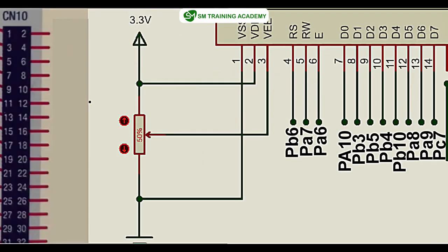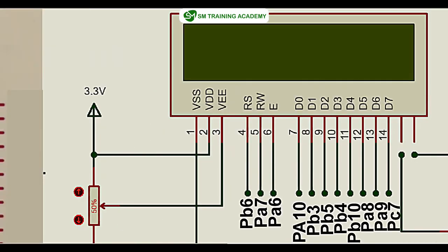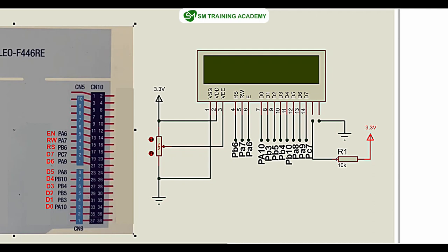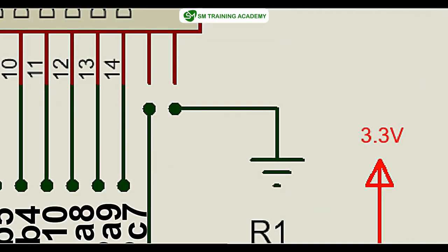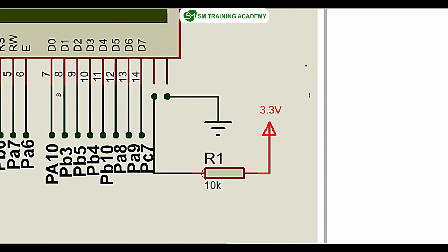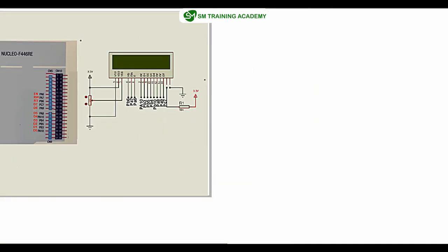For powering the LCD: VSS, the first pin, is connected to ground of the development board; VDD is connected to the 3.3V pin of the development board; and VEE is connected to a 10 kilo-ohm variable resistor. VEE is useful for varying the contrast of the font on the LCD. The anode terminal — pin 15 — is connected to the 3.3V supply through a 1 kilo-ohm resistor. If you want further brightness you can reduce the resistance value, and the cathode — pin 16 — is connected to ground.